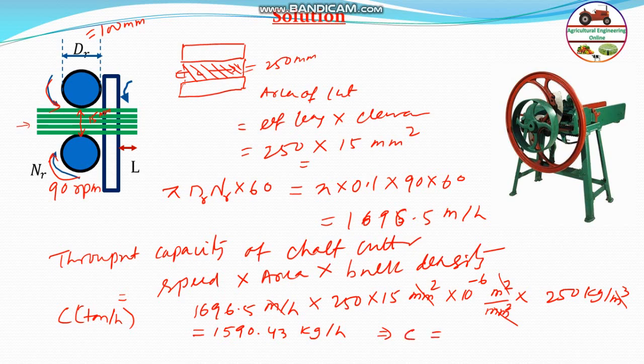The answer will be 1590.43 kg per hour. To convert it to ton, divide by 1000. C will be equal to 1.59 ton per hour. This is the answer, the capacity of the chaff cutter will be equal to 1.59 ton per hour.